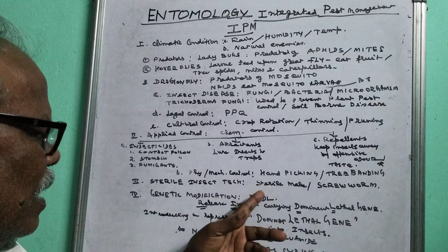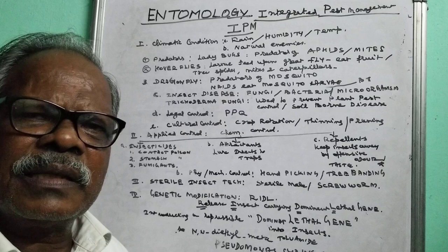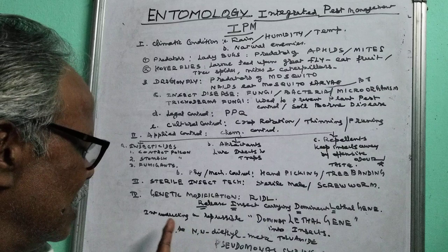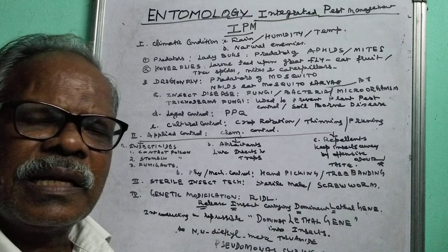Next is genetic modification — RIDL: Release of Insects carrying a Dominant Lethal gene. This is genetic engineering where we introduce a repressible dominant lethal gene into insects, which will kill them. That is called genetic modification or genetic engineering.